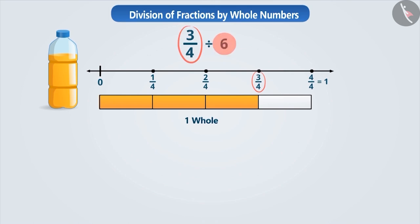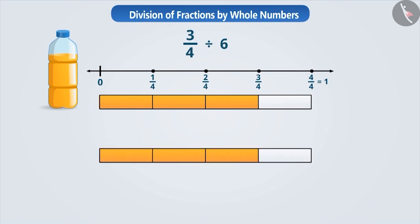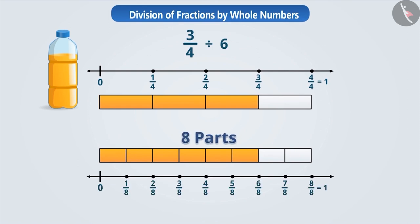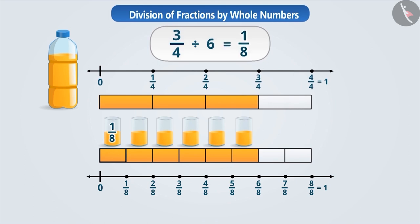Since three by four litre of juice is to be divided equally among six children, we have to make six equal parts of the shaded portion. For this, we have to divide each part into two equal parts so that the shaded part is divided into six equal parts. Here we have a total of eight parts. Upon dividing the shaded part into six equal parts, we get each part as one-eighth. So each child gets one-eighth of a litre of juice. Therefore, three by four divided by six is one-eighth.